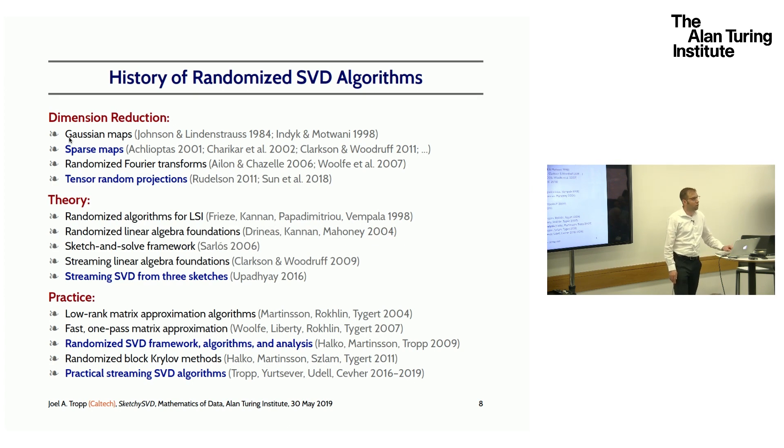Let me say just a little bit about the history of this subject. The idea of randomization in linear algebra dates back to work in the literature on Banach space geometry, the work of Johnson and Lindenstrauss on randomized dimension reduction. In the late 90s, some theoretical computer scientists got the idea that maybe we could use randomized dimension reduction to compute truncated SVDs more efficiently. A little later, some numerical analysts got interested in this problem and started building practical algorithms. The first algorithm that could operate in one pass is in a paper by Woolfe, Liberty, Rokhlin, and Tygert from 2007. This is the prototype method for streaming singular value decompositions.